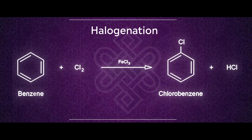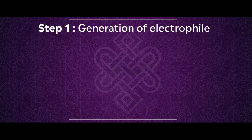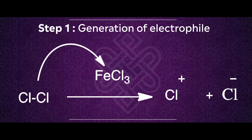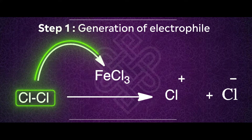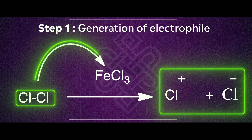Let's look at this reaction step by step. Step one: generation of electrophile. The electrophile is generated from chlorine in the presence of Lewis acid ferric chloride. Ferric chloride, being a Lewis acid, attracts electrons towards itself, thereby forming two chlorine ions — a positive chlorine cation and a negative chloride anion.